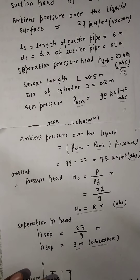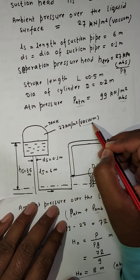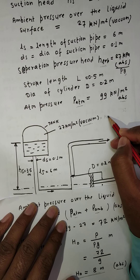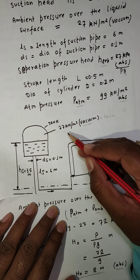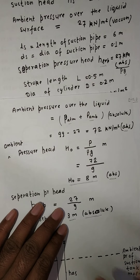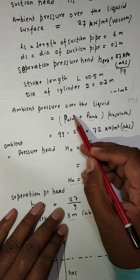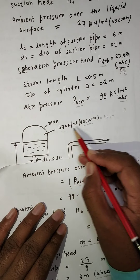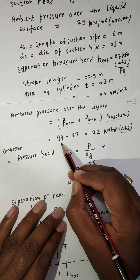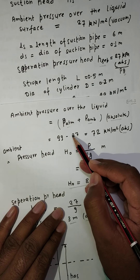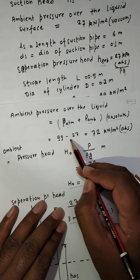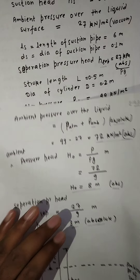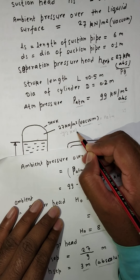Now, the ambient pressure over the liquid is given as 27 kN per meter square vacuum. To find the absolute value: absolute pressure = atmospheric pressure minus the vacuum pressure. Atmospheric pressure is given as 99 kN per meter square, and the vacuum value of 27 is negative, so 99 minus 27 = 72 kN per meter square absolute. This is the absolute pressure above the liquid surface.